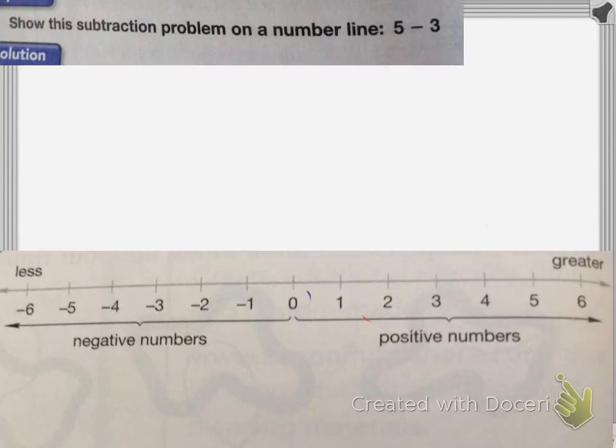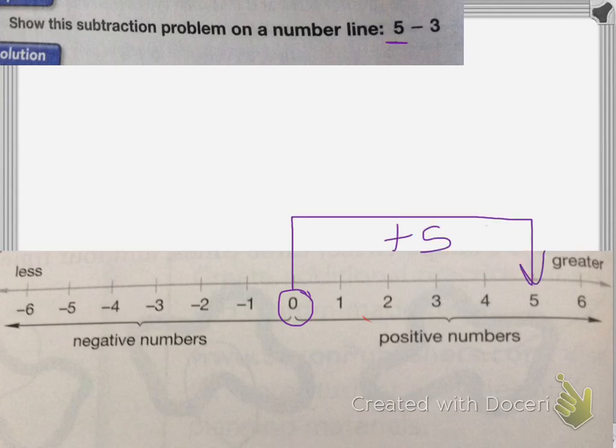We can also show subtraction. Again, starting at 0, I'm going to go positive 5, because 5 is a positive number. I'm going to go to the right 5: 1, 2, 3, 4, 5. But on this one, I'm going to be subtracting 3. So since my -3 is negative, I'm going to be moving to the left. So I'm going to move to the left 3 places: 1, 2, 3. My answer will be 2.